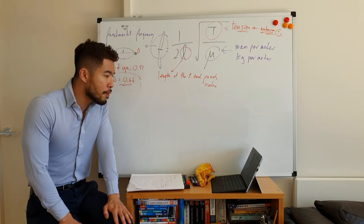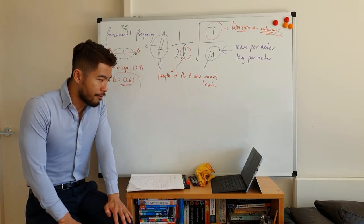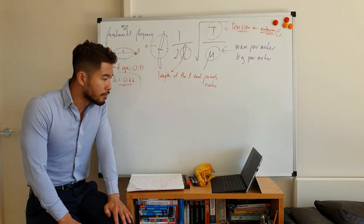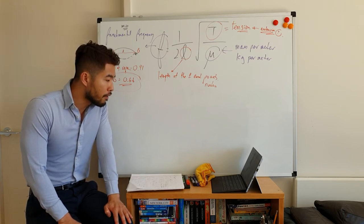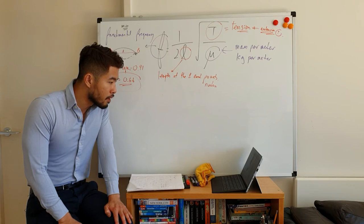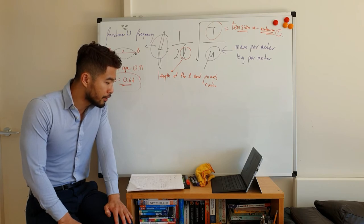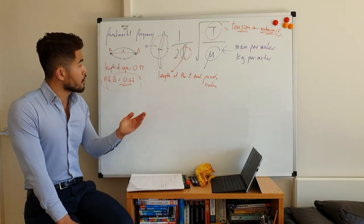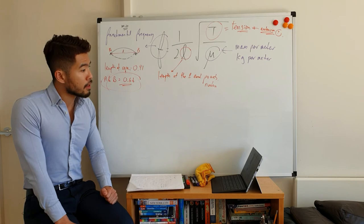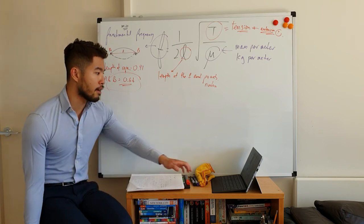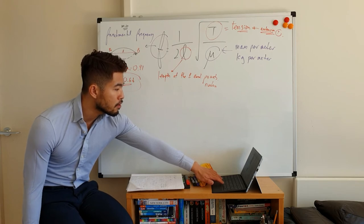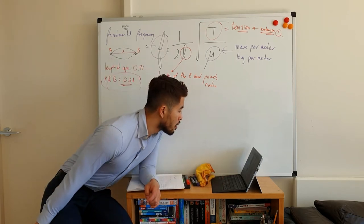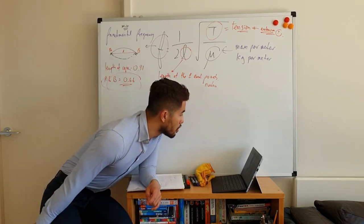For question 5C: determine the speed at which waves travel along the string. The first harmonic frequency is 370 Hz — first harmonic is another word for fundamental frequency. This is just a straightforward application of v = f × lambda.